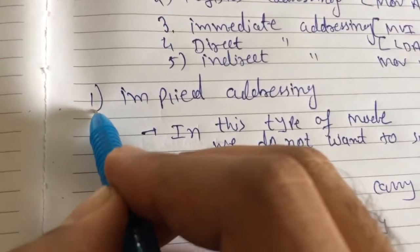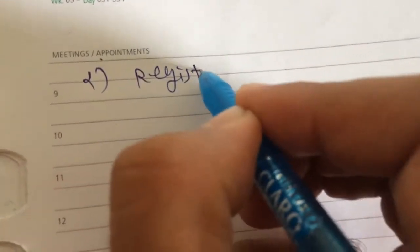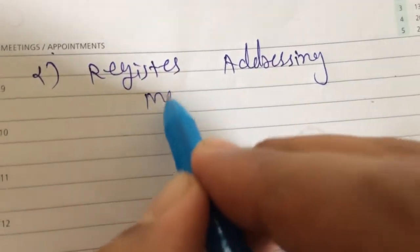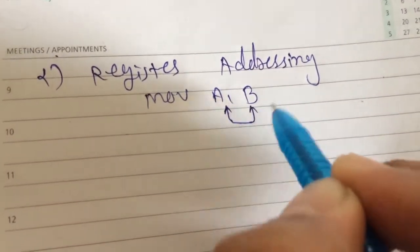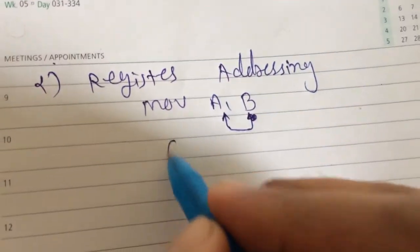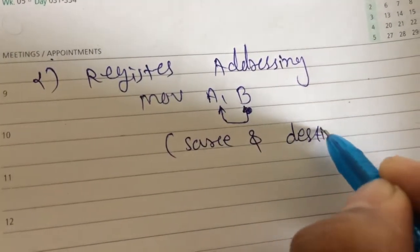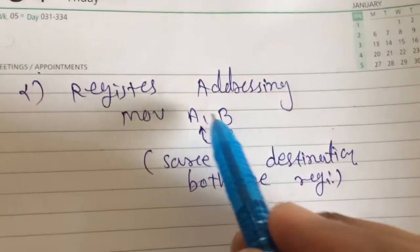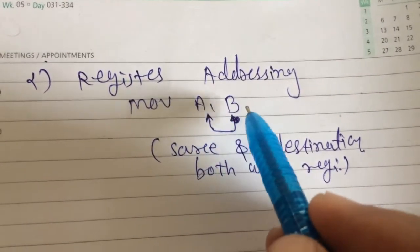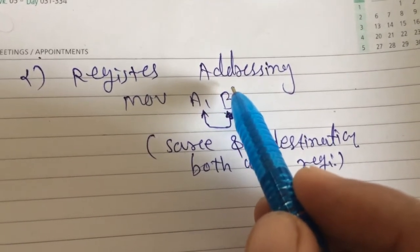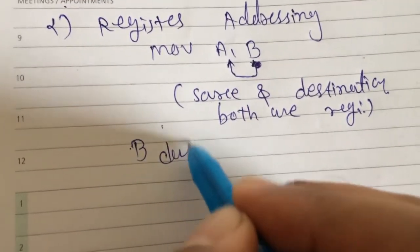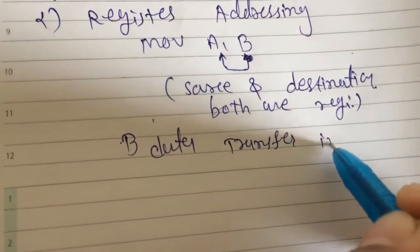We move to our second addressing mode, that is Register Addressing Mode. In register addressing mode, source and destination both are registers. Whatever data is specified inside the B register, that data transfers into the A register — B data transfers into A.